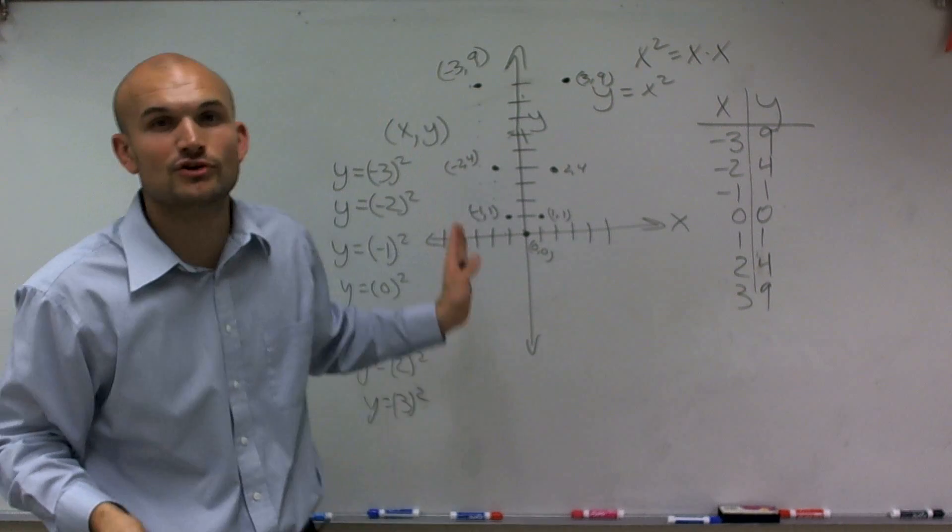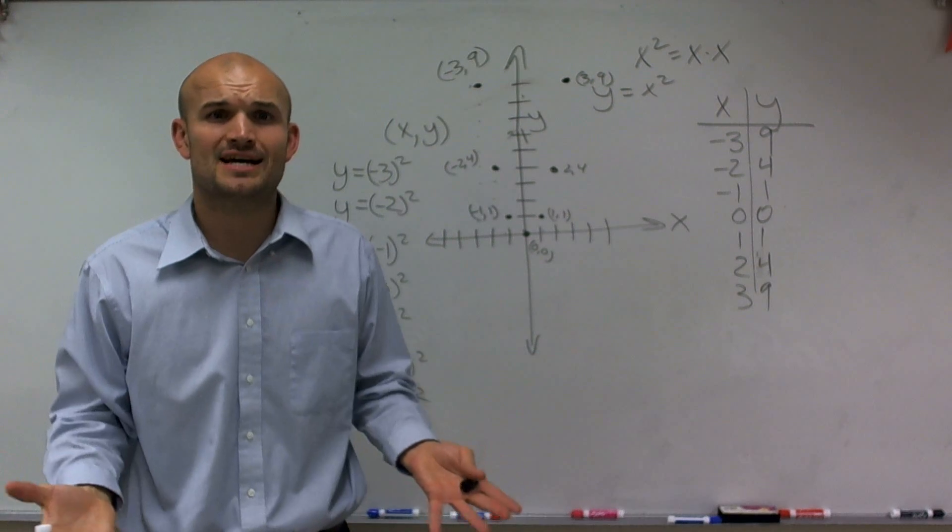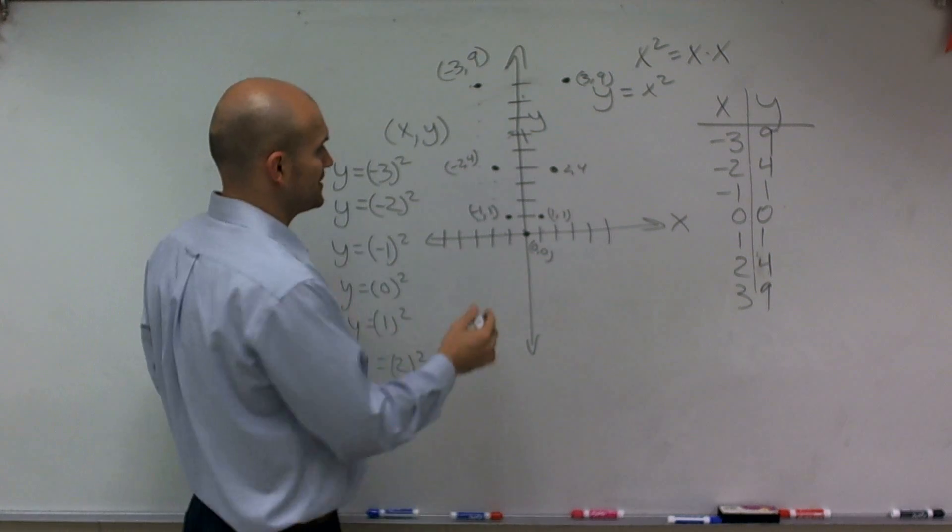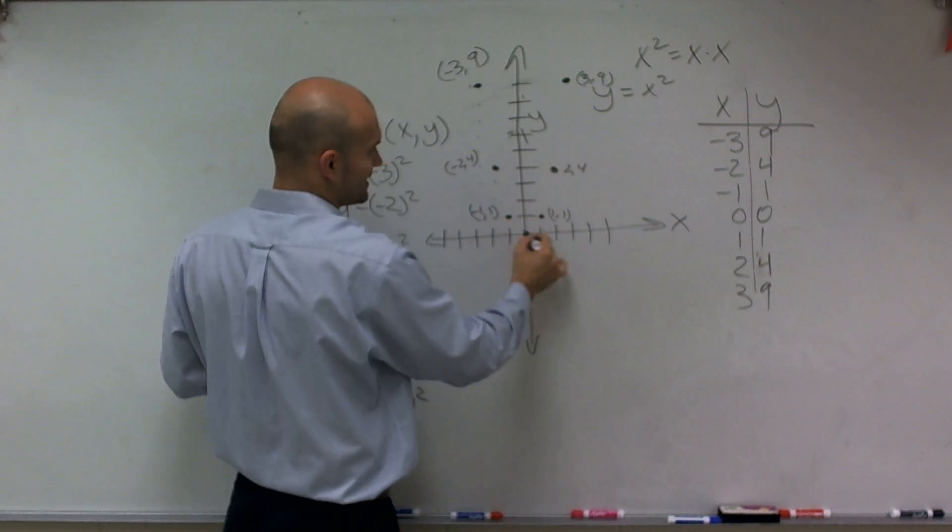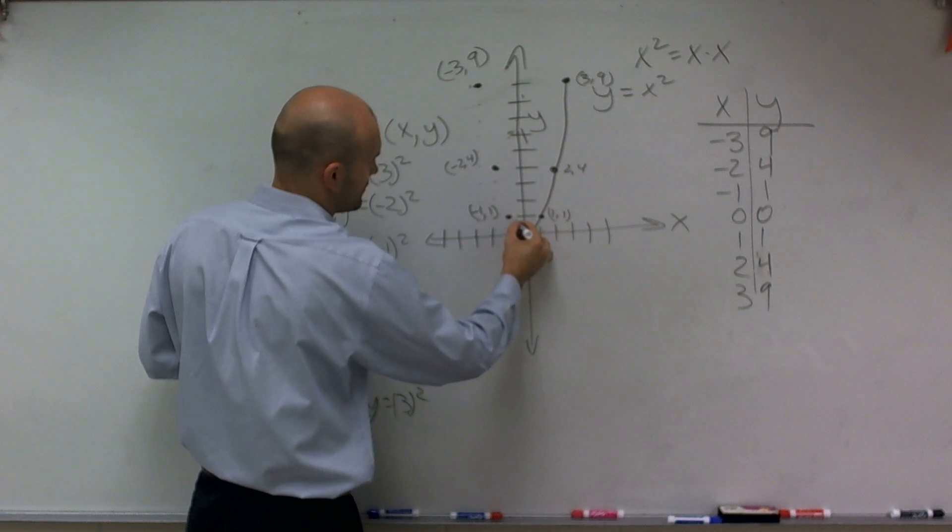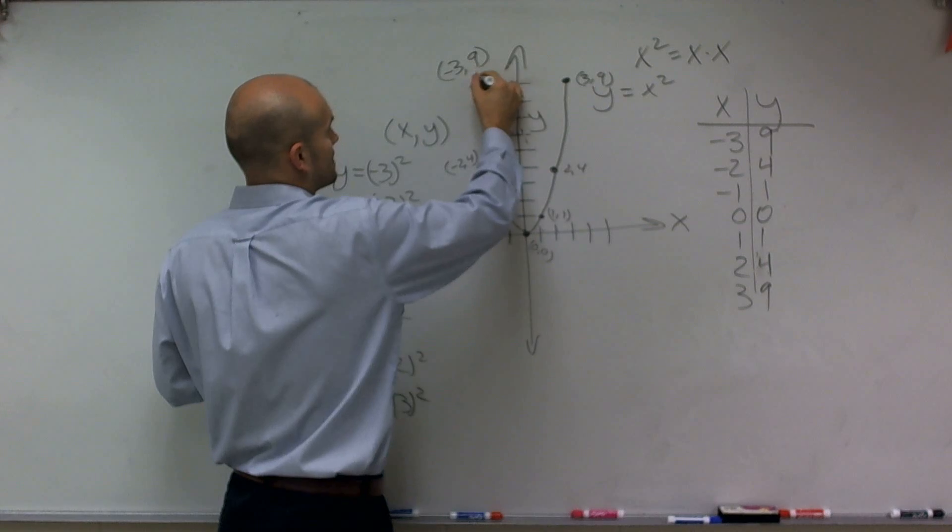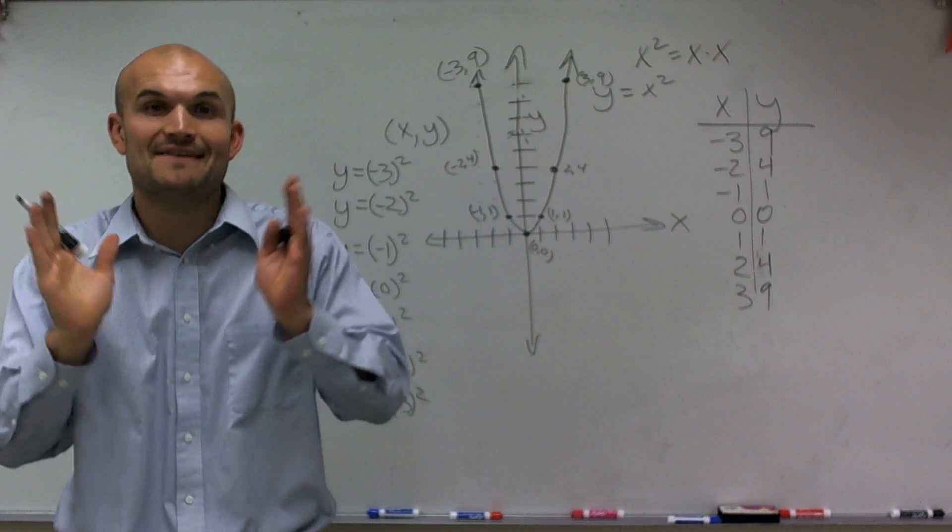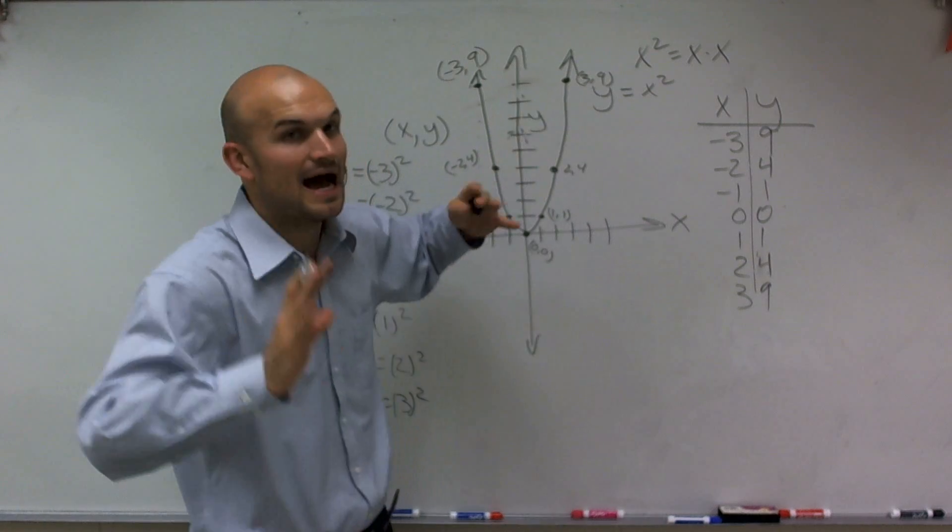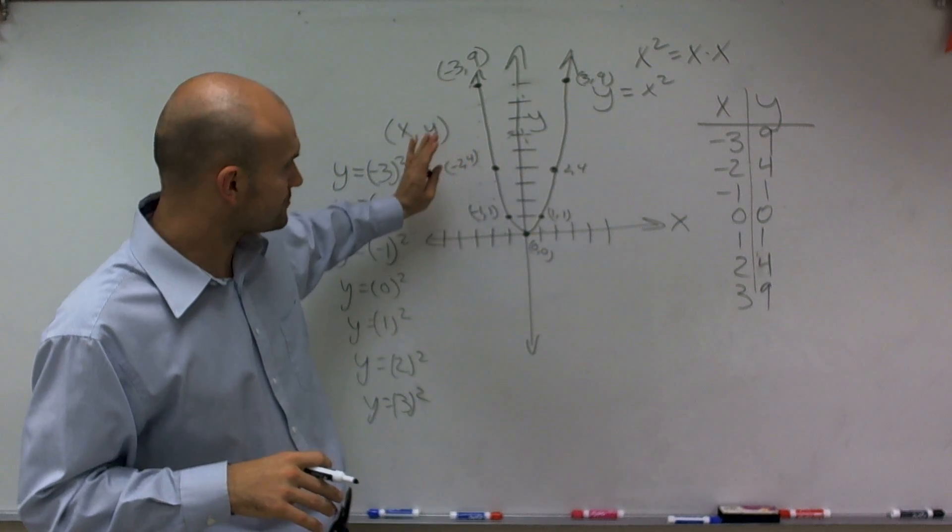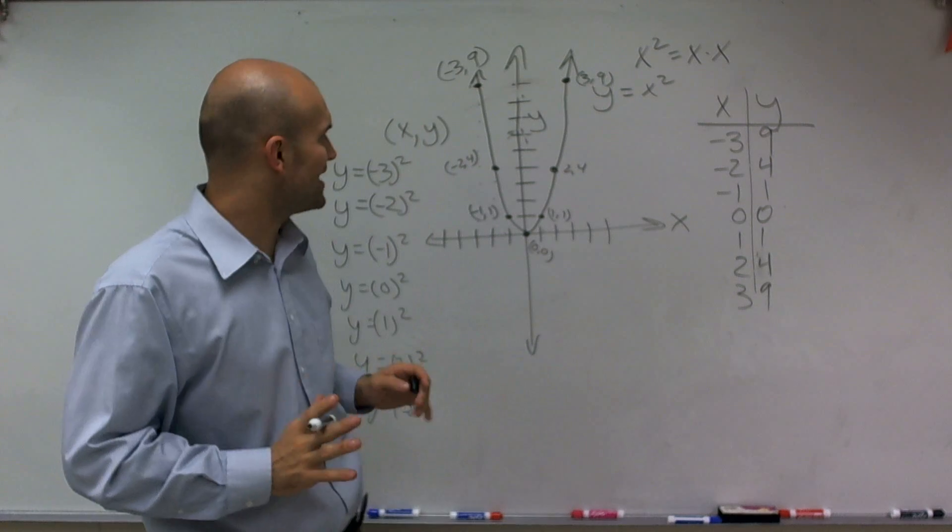So what we're going to do is now we're going to create a little path. And the path of the x squared is actually what we call a parabola, where sometimes we call it a u-shaped graph because it's not a line. It's not lines connected, but it actually has a nice little curve to it. And I'm going to put arrows at the end because this graph is going to extend infinitely up and out into space. So, ladies and gentlemen, that is your quadratic.